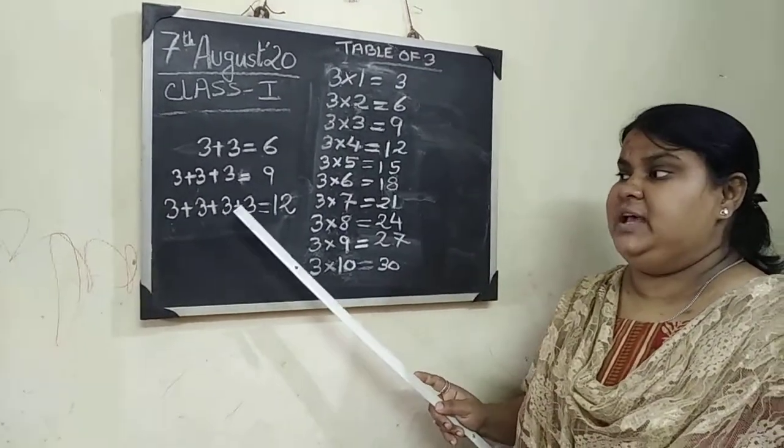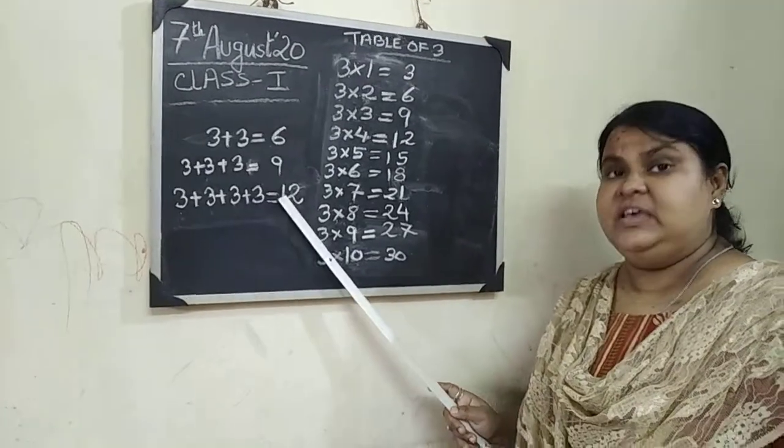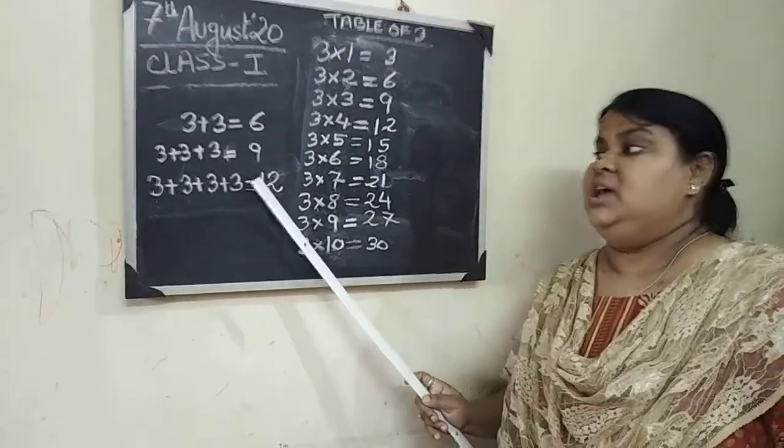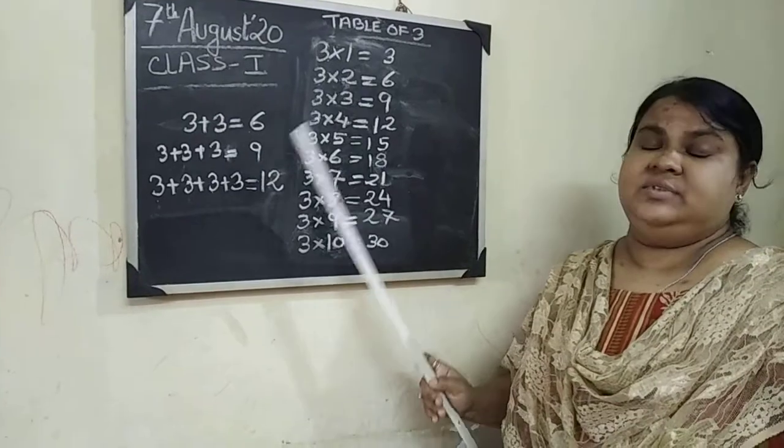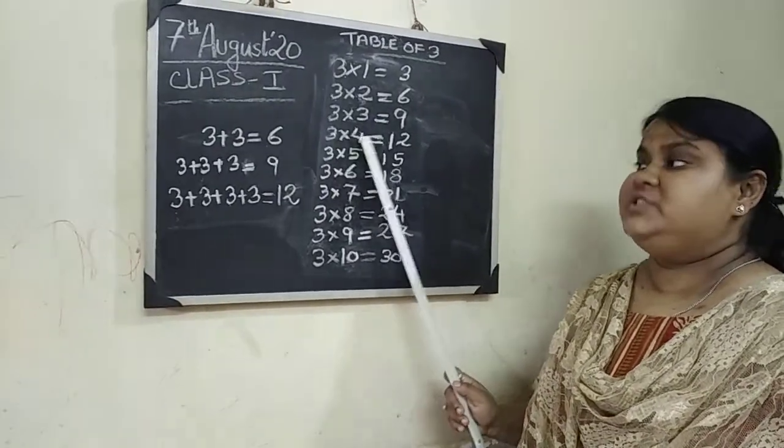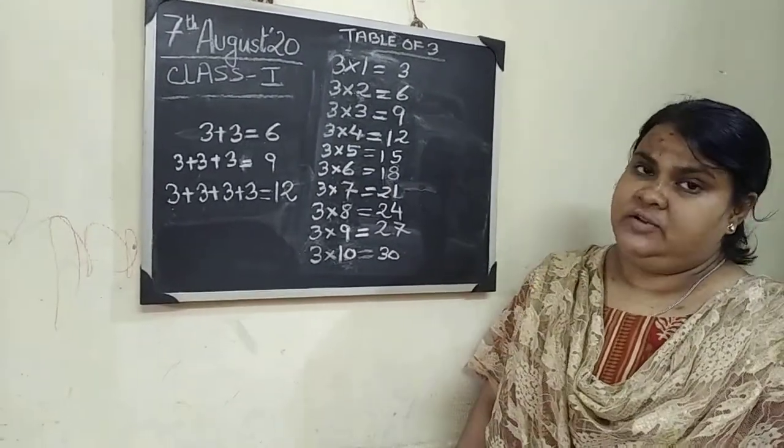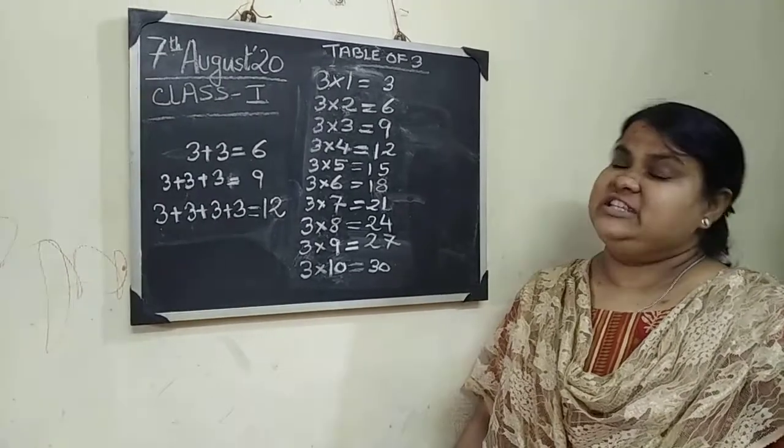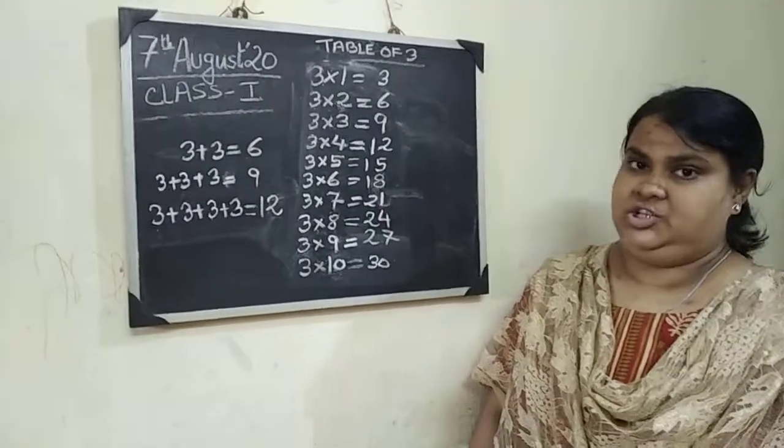Again, 3 plus 3 plus 3 plus 3 equals 12. See such a long process. But a simple thing we can write: 3 times 4 is 12. So children, remember always that multiplication is the repeated addition.